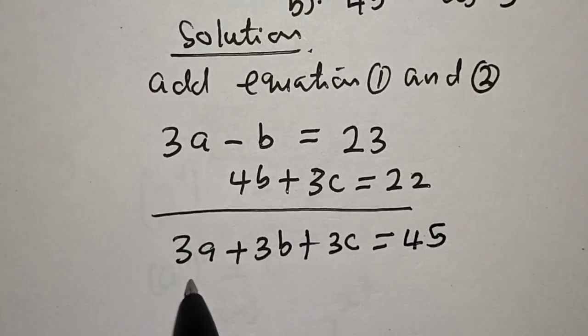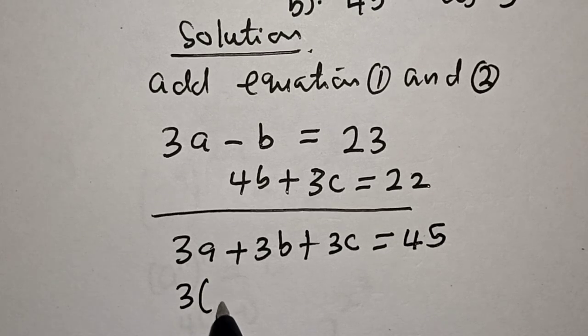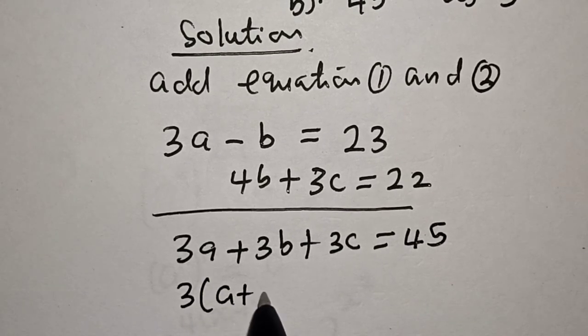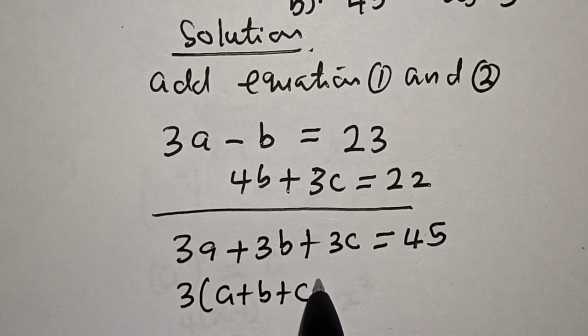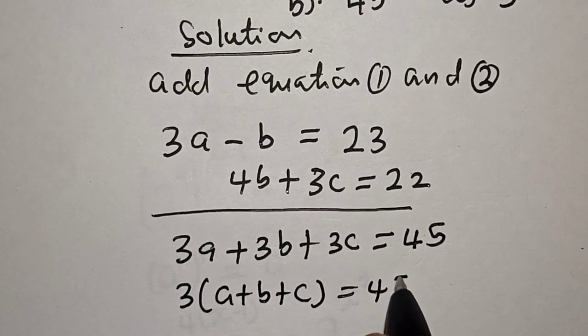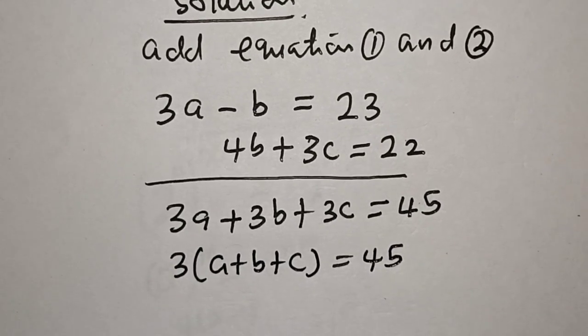Now, 3 is common, let's bring it out. 3 into A plus B plus C is equal to 45.